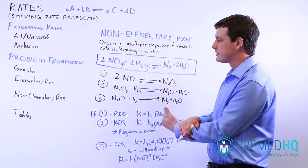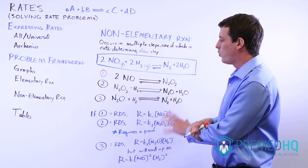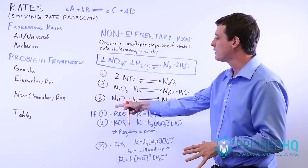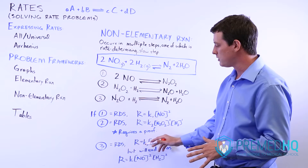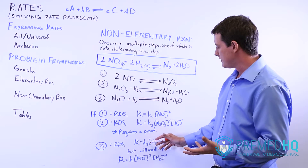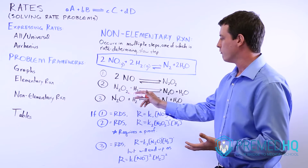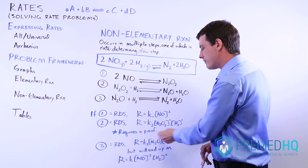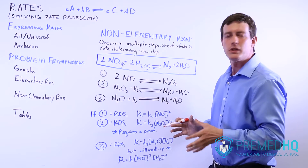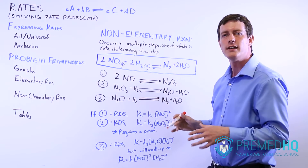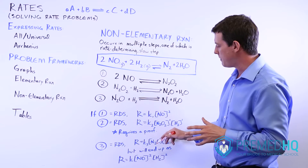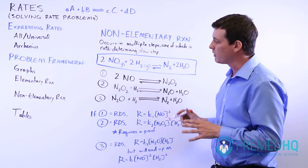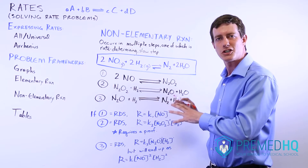A problem emerges when the second or third step is the rate-determining step. If the last step is the rate-determining step, you have to express the rate as though this were an elementary reaction — so the rate equals K of step three times N2O raised to the first power times H2 raised to the first power. But N2O is not part of the overall balanced equation, so that's not a legal way of expressing the rate. What you have to do is use what's called an equilibrium approximation.